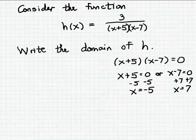So what this tells us is that if we substitute either minus 5 or 7 for x in this formula, in this fraction, the denominator will turn out to be 0. And then we'll have 3 divided by 0, which is not a real number.